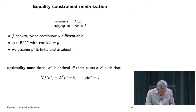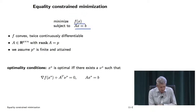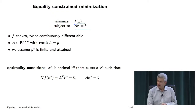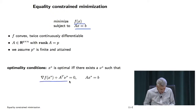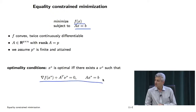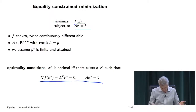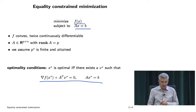So we want to minimize f, where f is smooth, subject to Ax equals b. We're going to assume that A is full rank — it's wide and full rank. We'll assume the optimum is attained. And basically, these are the necessary and sufficient optimality conditions — the KKT conditions. Nu-star is an optimal dual variable, also called the Lagrange multiplier. So you want to solve these two equations.